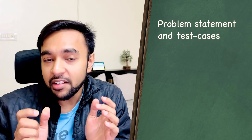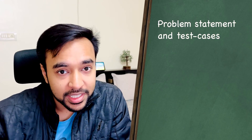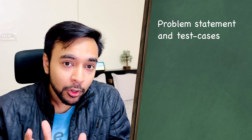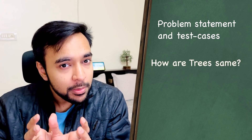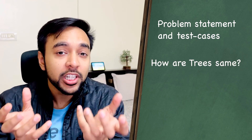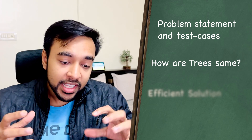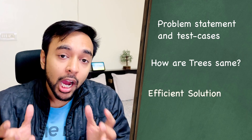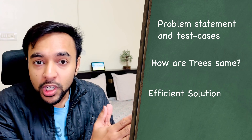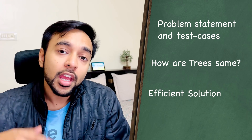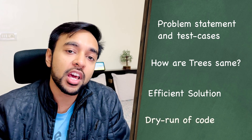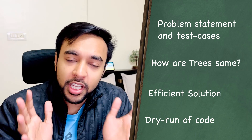I will explain the problem statement and we will look at some sample test cases. Next, I'm going to explain what you actually mean by trees being identical or same. And then going forward, we will see how you can determine if two given trees are same or not. We will also do a dry run of the code so that you can understand and visualize how all of this actually works in action. Without further ado, let's get started.